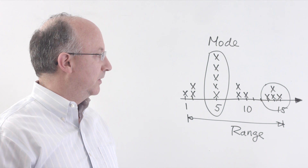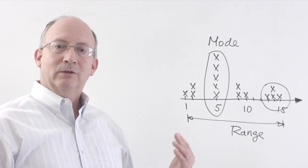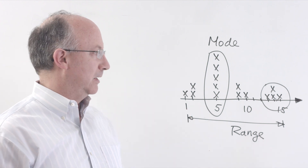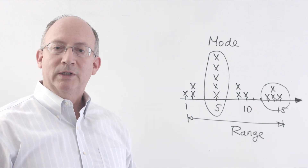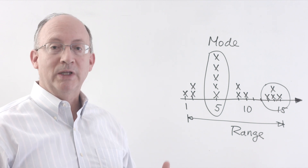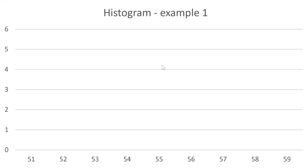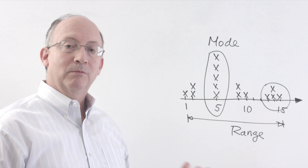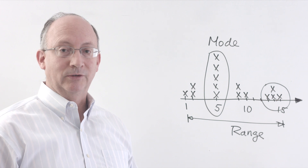Now, having said this, what the histogram cannot tell us is how the numbers happened — that is, were they trending as they were happening? Were they trending towards larger numbers? For instance, did we have first the numbers on the left side, and then they slowly happened to grow until we got the numbers on the right side? It's a possibility, but the histogram by itself cannot tell us that.